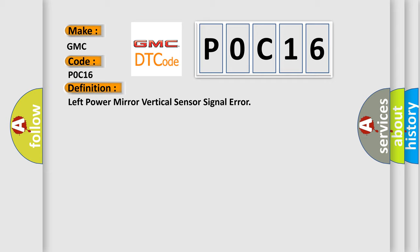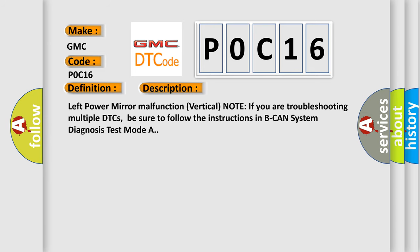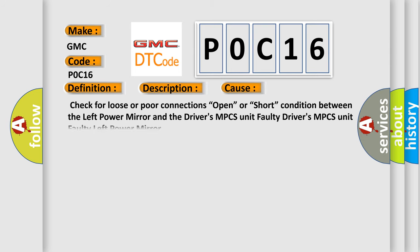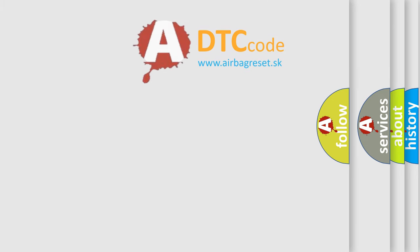Here is a short description of this DTC code: Left power mirror malfunction — vertical. If you are troubleshooting multiple DTCs, be sure to follow the instructions in BCAN system diagnosis test mode A. This diagnostic error occurs most often in these cases: check for loose or poor connections, open or short condition between the left power mirror and the driver's MPCS unit, faulty driver's MPCS unit, or faulty left power mirror.